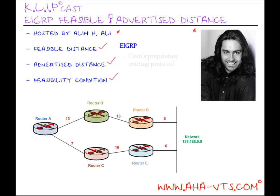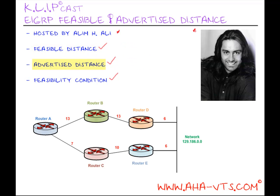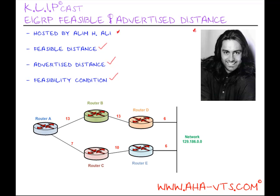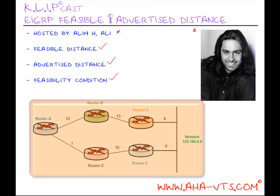As we all know, EIGRP is Cisco's proprietary routing protocol, with many complexities, two of which are the feasible distance and the advertised distance. Now, the feasible distance is the lowest known distance, or best metric, with respect to a router along a path to a particular destination. The feasible distance also includes the metric to the router's neighbor who's advertising the path to the destination.